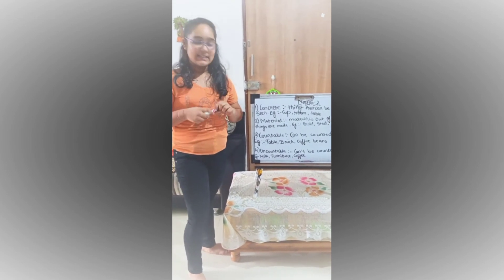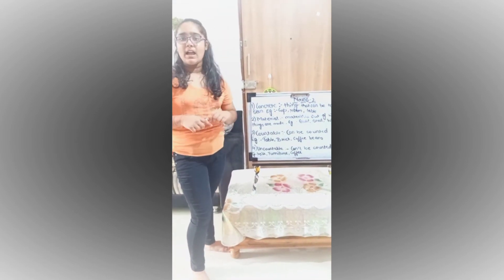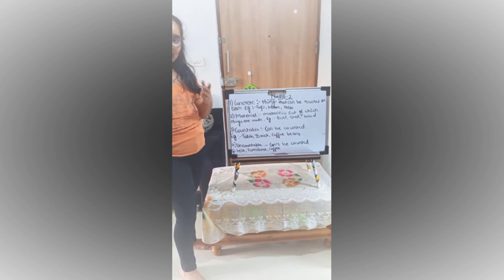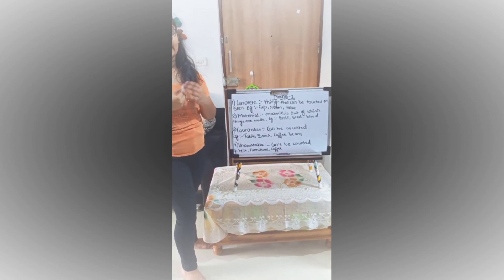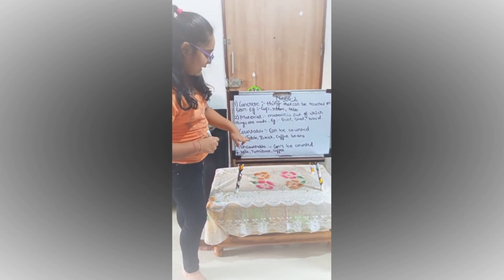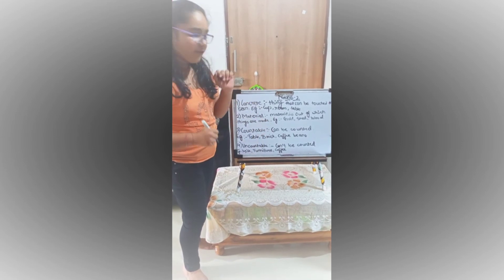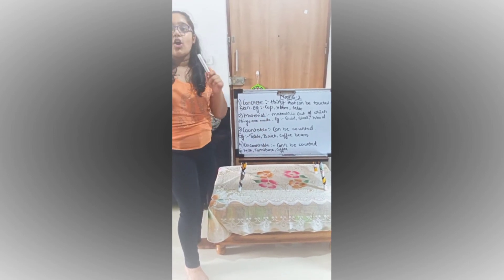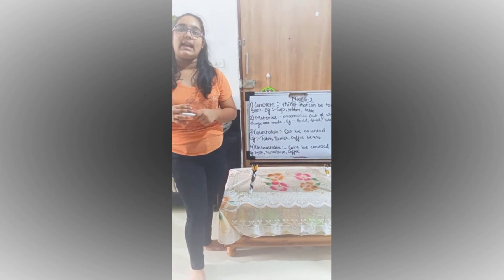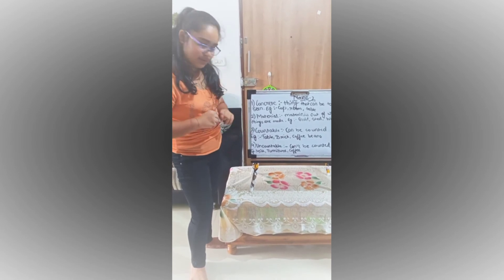Next we'll study about countable nouns. Countable nouns, as the name suggests, are things which can be counted. For example, table, brick, coffee beans — all of these things can be counted and hence come under countable nouns.